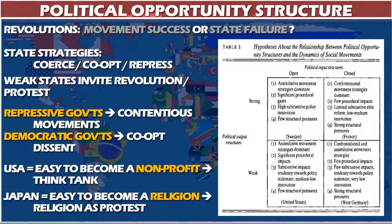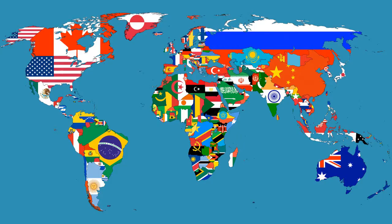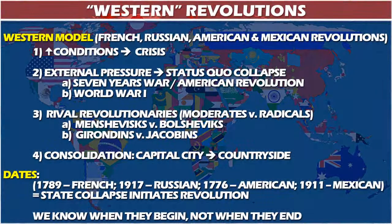In China, Falun Gong — a martial arts and exercise type of group — is one of the main forms that protest takes against the government, because it's hard for the government to clamp down on it given its innocuous face. Groups sometimes take the form or take the opportunities that the government allows them. Samuel Huntington says there are two different types of revolution: a Western style and an Eastern style, and this tells you what sequence the revolution will follow.